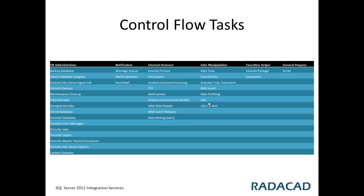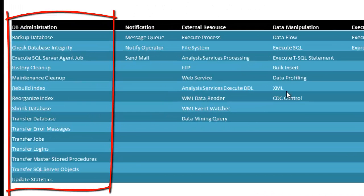We have different types of control flow tasks, which I've categorized into six main categories. First, we have DB administration tasks — for example, backup database, history cleanup, shrink database, transfer login. These are specific to database administration. In this course we will not cover all database administration tasks in detail, because they are more DBA-related.